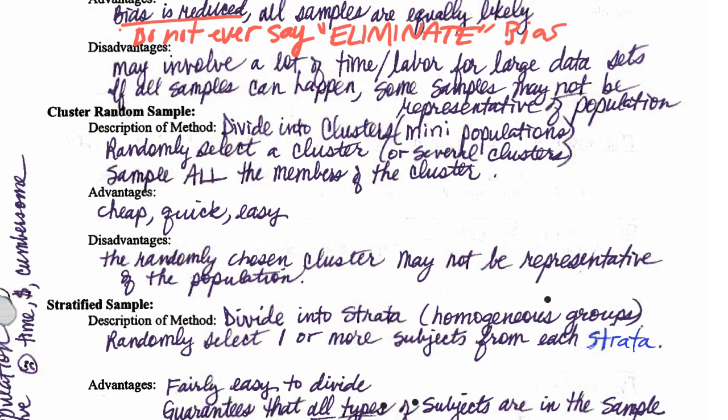Disadvantages to a simple random sample. It could be time consuming if it's huge amounts of data, lots of labor for that huge amounts of data. But I think here's probably something that is more cautious to guard against. If all samples are equally likely to happen, then some samples may not be representative of the population. For example, if every sample is equally possible, what happens if I get a sample of five teeny tiny rectangles, or five of the largest rectangles? So simple random sample can be dangerous in that regard.